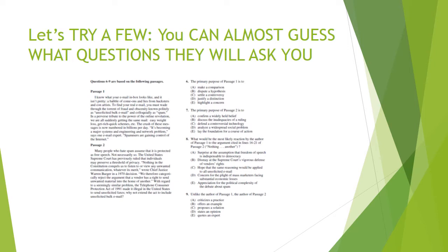'A perverse tribute to the power of the online revolution—we are all suddenly getting the same mail: easy weight loss, get-rich-quick schemes, etc.' These are examples of spam in case we didn't know what it was. 'The crush of these messages is now numbered in the billions per day. It's becoming a major systems and engineering network problem, says one email expert. Spammers are gaining control of the internet.' Applying PSAA: the purpose is simply to explain how in today's modern age we're getting more and more spam. The structure presents a vignette about our inbox with appeals to various types of spam. The attitude is almost joking, appealing to the humor we find in those unsolicited messages.